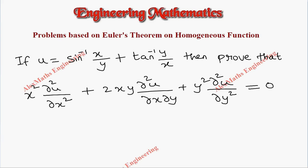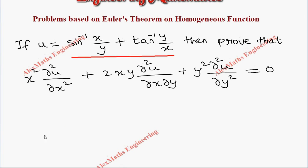Hi students, this is Alex here. In this video we are going to discuss a problem based on Euler's theorem on homogeneous functions. There is a function u which is sine inverse of x by y plus tan inverse of y by x, and we have to prove this expression. Let's rewrite the function as u of x comma y.